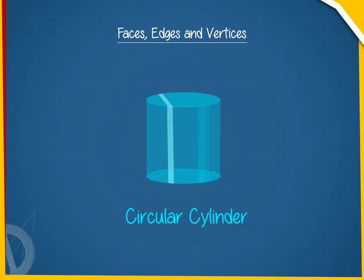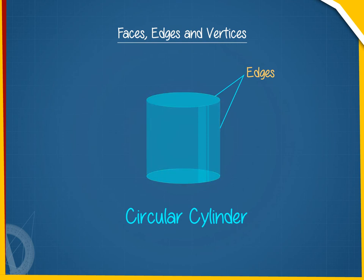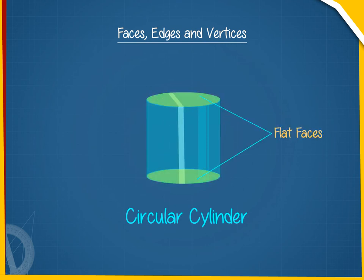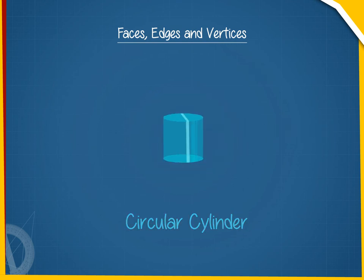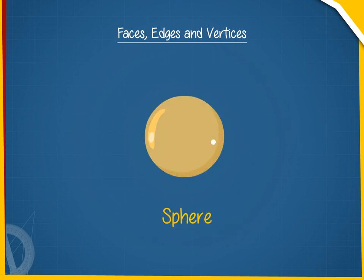But in a circular cylinder, the edges are curved and the faces are flat as well as curved. In a sphere, there is no vertex, no edge and no flat face.